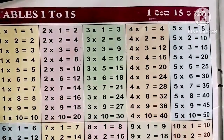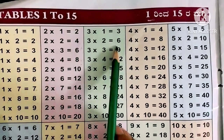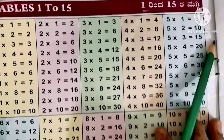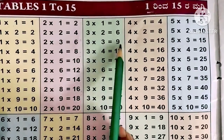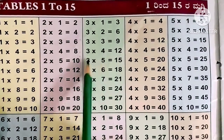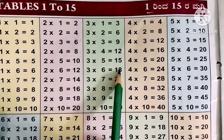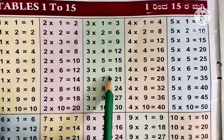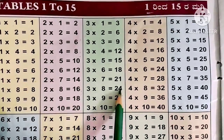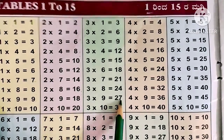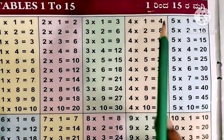Now the 3 times table. 3 ones are 3, 3 twos are 6, 3 threes are 9, 3 fours are 12, 3 fives are 15, 3 sixes are 18, 3 sevens are 21, 3 eights are 24, 3 nines are 27, 3 tens are 30.